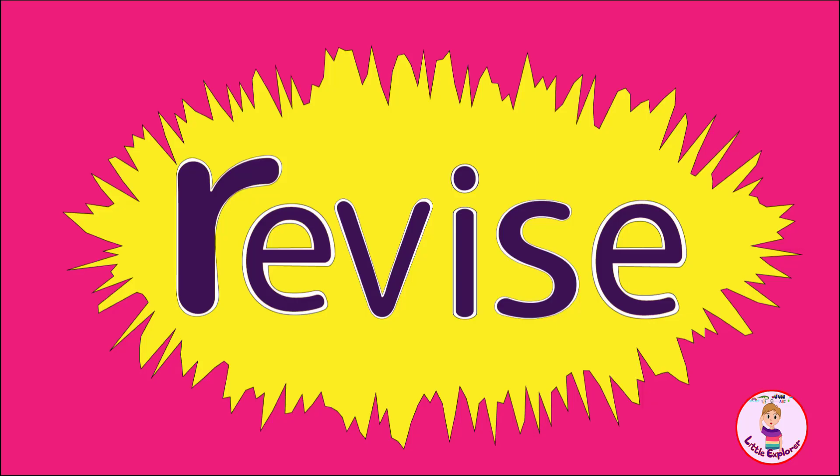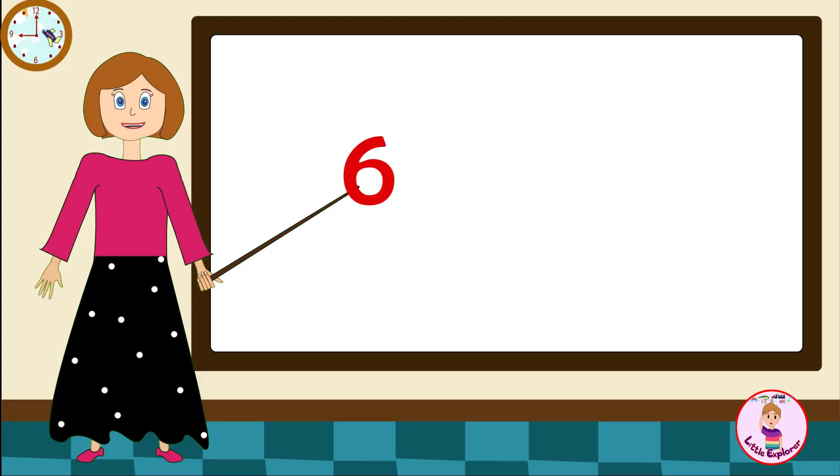Let's revise it one more time. Come on! Six ones are six, six twos are twelve, six threes are eighteen, six fours are twenty-four.